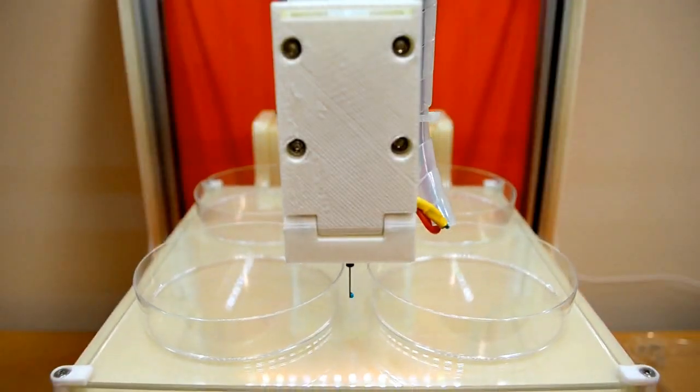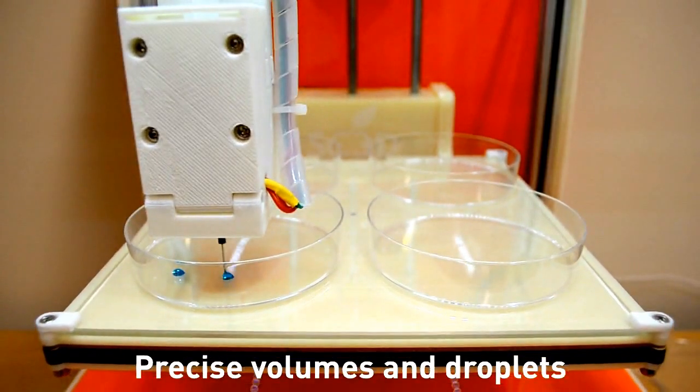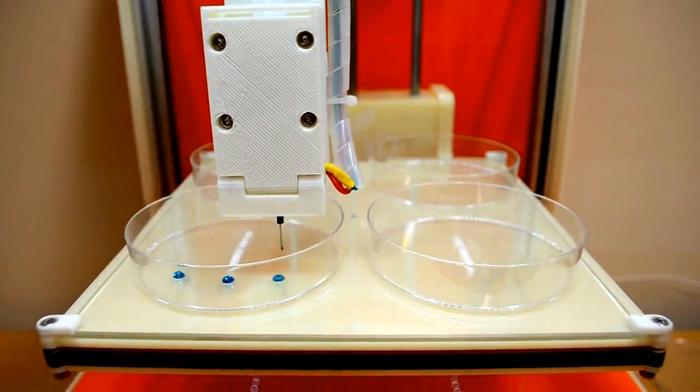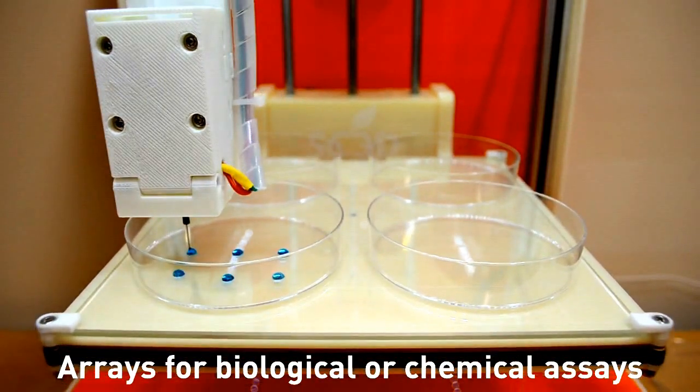With the REBEL bioprinter, students can generate precise volume and droplets of fluids in an array format to create biological or chemical assays.